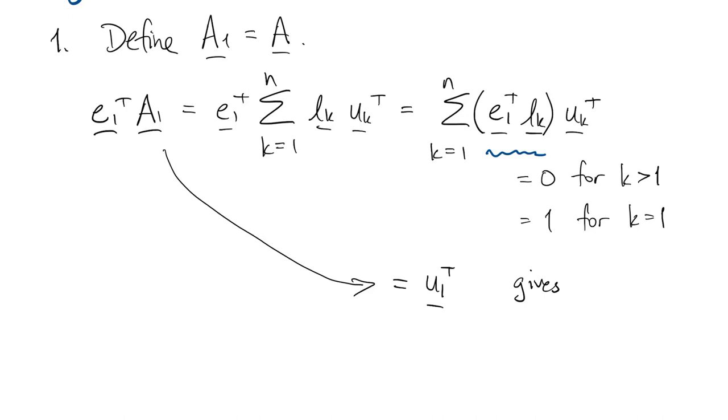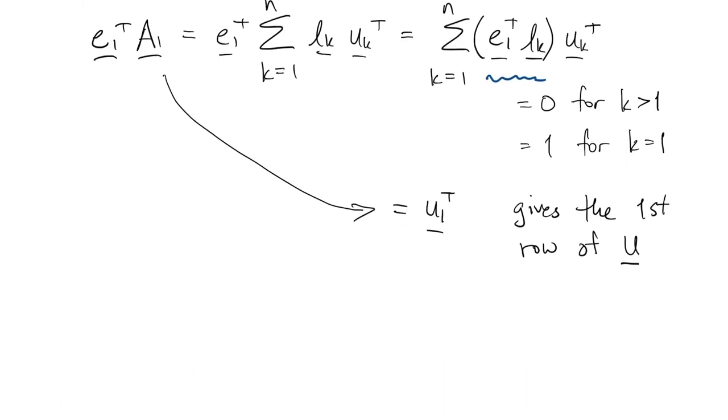So that whole sum just boils down to U1 transpose, which means that the first row of A1 gives us the first row of U.